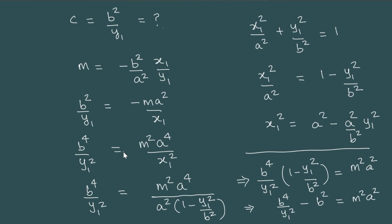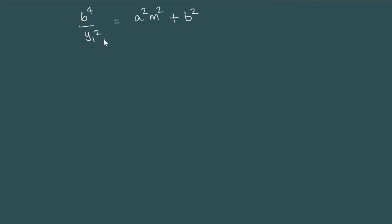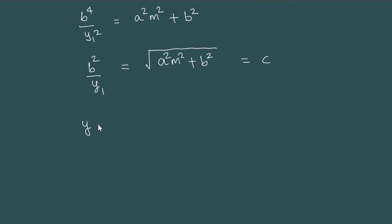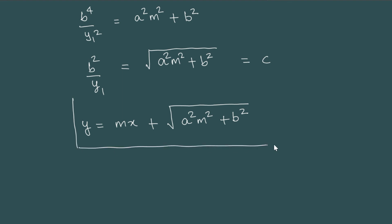Taking the square root, b²/y1 = √(a²m² + b²). This is our value of c. So the equation of the tangent that we are after is y = mx ± √(a²m² + b²). This is the equation of the tangent of an ellipse with a given slope, and it can be used to solve tangent-related problems.